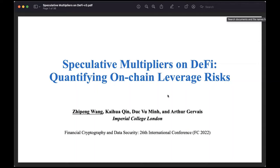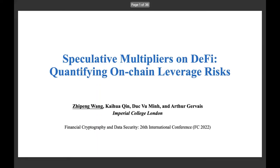Hello, everyone. My name is Zhihpeng Wang. I'm a PhD student from Imperial College London. I'm here to talk about our recent work, Speculative Multipliers on DeFi: Quantified On-chain Leverage Risks. This work is joint with Kai Huachin, Duke Vimin, and Arthur GV.